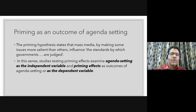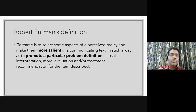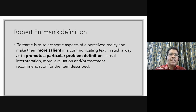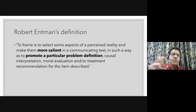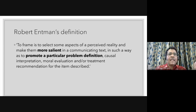Now we come to the most important definition of framing. Whoever talks about framing has to talk about Robert Entman's definition. Entman defines framing as something which selects certain aspects of a perceived reality and makes them more salient — that is, it makes certain aspects of reality more important — in such a way as to promote a particular problem definition. As with COVID-19 news, the same issue can be framed in different ways, making one particular thing more salient, such as how people are careless about wearing masks.